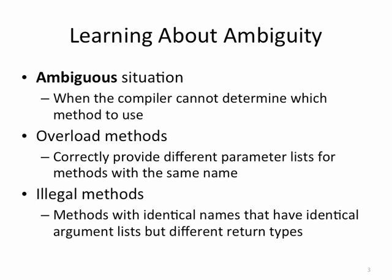If the compiler cannot figure out which method to use, that's known as ambiguity, and your program will not compile if you have ambiguity. If you are going to overload methods, be sure to provide different parameter lists that will avoid ambiguity. It is illegal to have methods with the same names that have identical parameter lists but return different types.